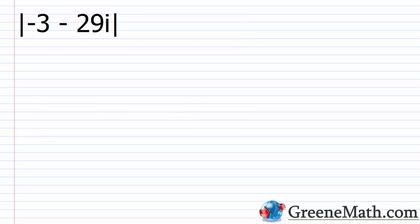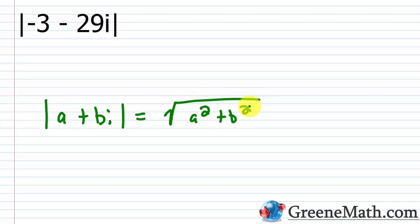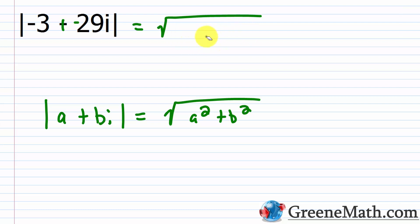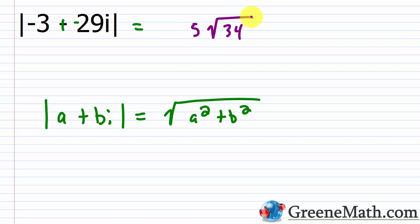For the absolute value of negative 3 minus 29i: a is negative 3, negative 3 squared is 9; b is negative 29, negative 29 squared is 841. 9 plus 841 is 850, under the square root sign. Now 850 is 25 times 34. Since 25 is a perfect square with square root 5, this simplifies to 5 times the square root of 34. Since 34 is 17 times 2, we can't simplify further — the answer is 5 times the square root of 34.